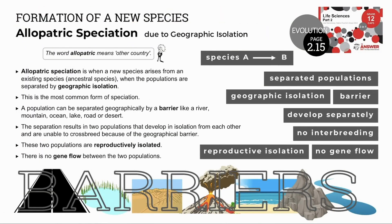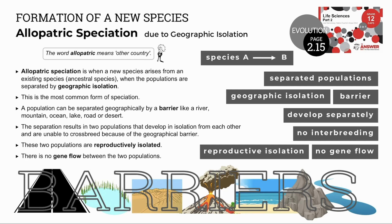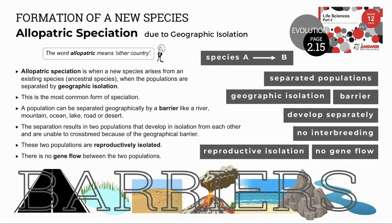Allopatric speciation is the formation of a new species due to geographic isolation — when thinking about it, you must think about a barrier. 'Allo' means other and 'patria' means land or country or area. Populations are separated by a barrier, known as geographic isolation, and develop separately in different environments. There's no interbreeding and they eventually become reproductively isolated with no gene flow — no individuals moving between populations and sharing genes.